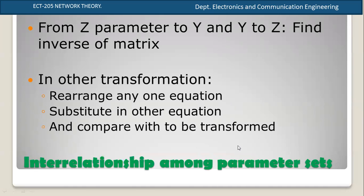The first type of problems are the parameters. The Z parameter and the Y parameter are inverse of each other. The Z matrix is equal to the inverse of Y, and Y is equal to the inverse of Z. This is the transformation between them.